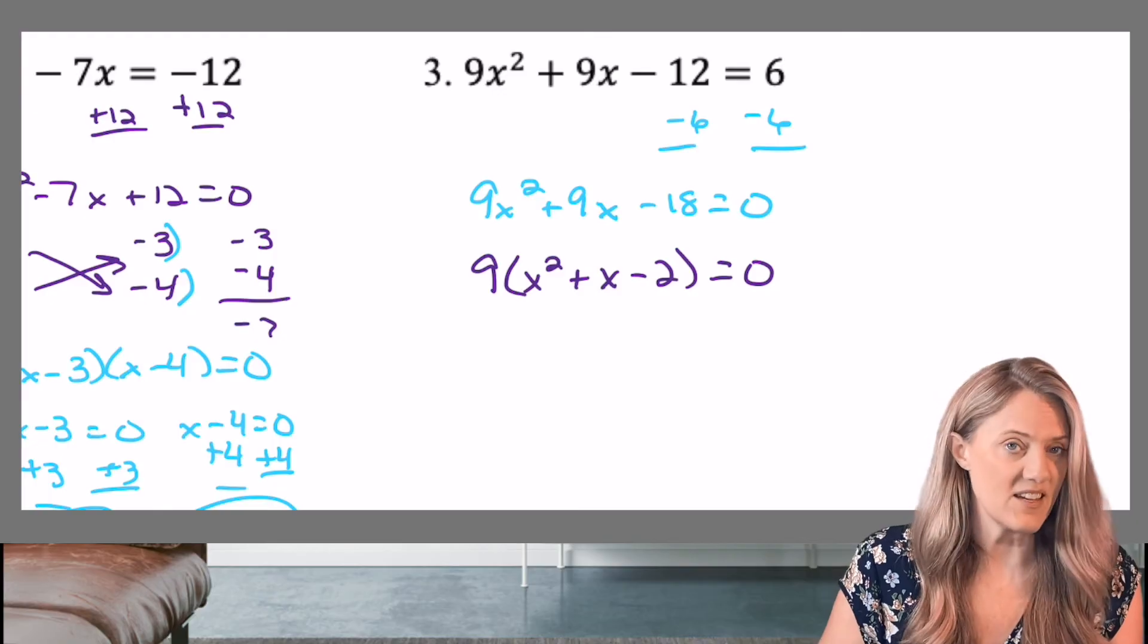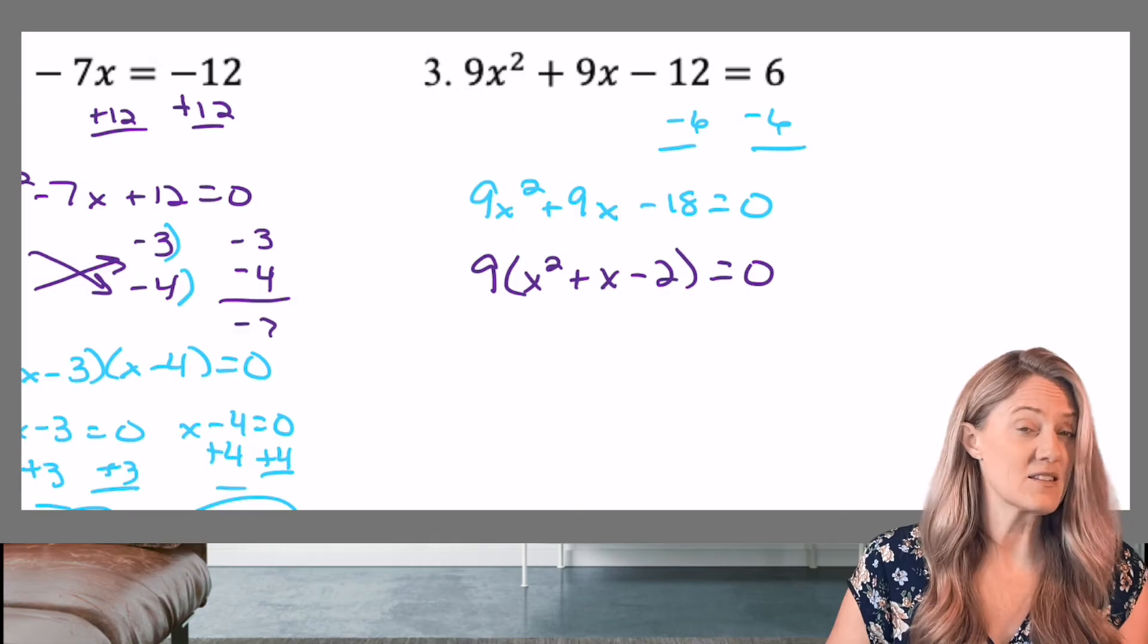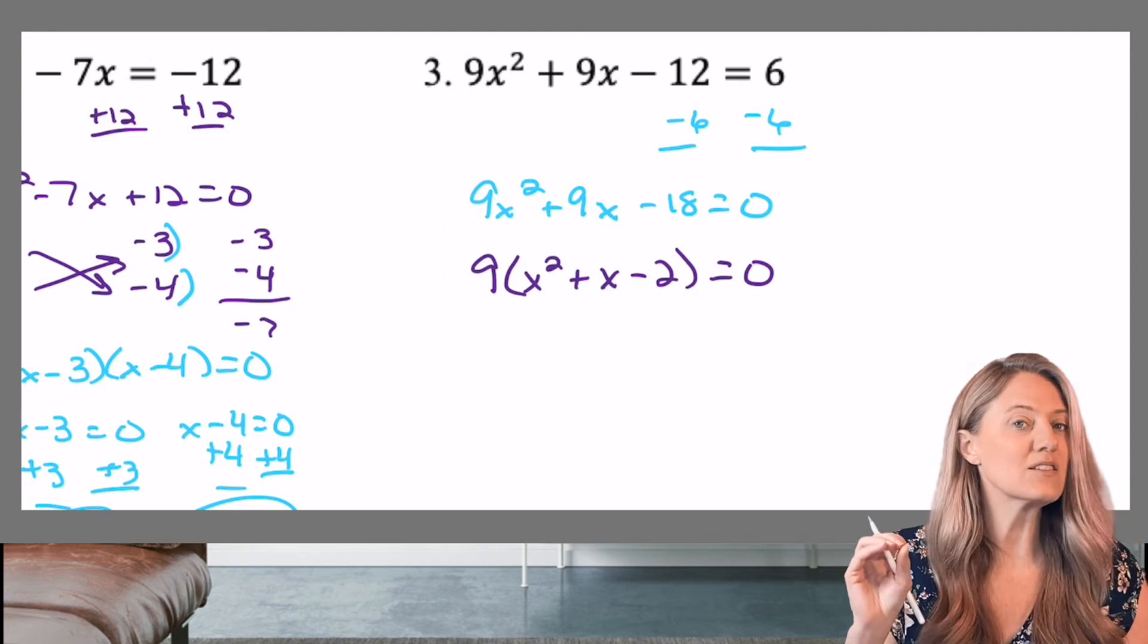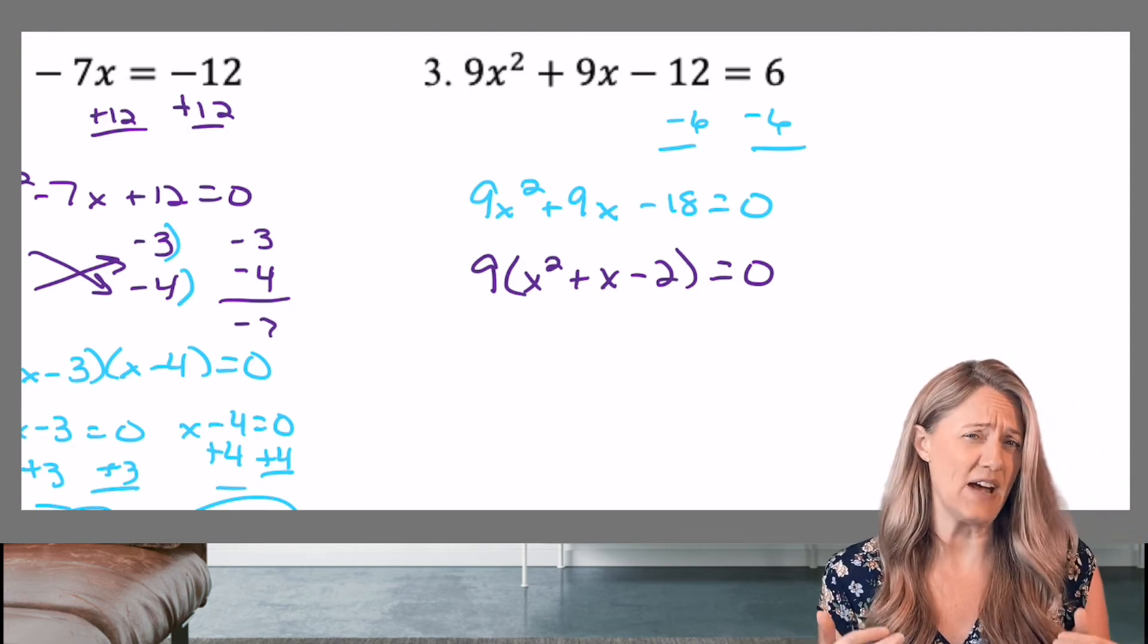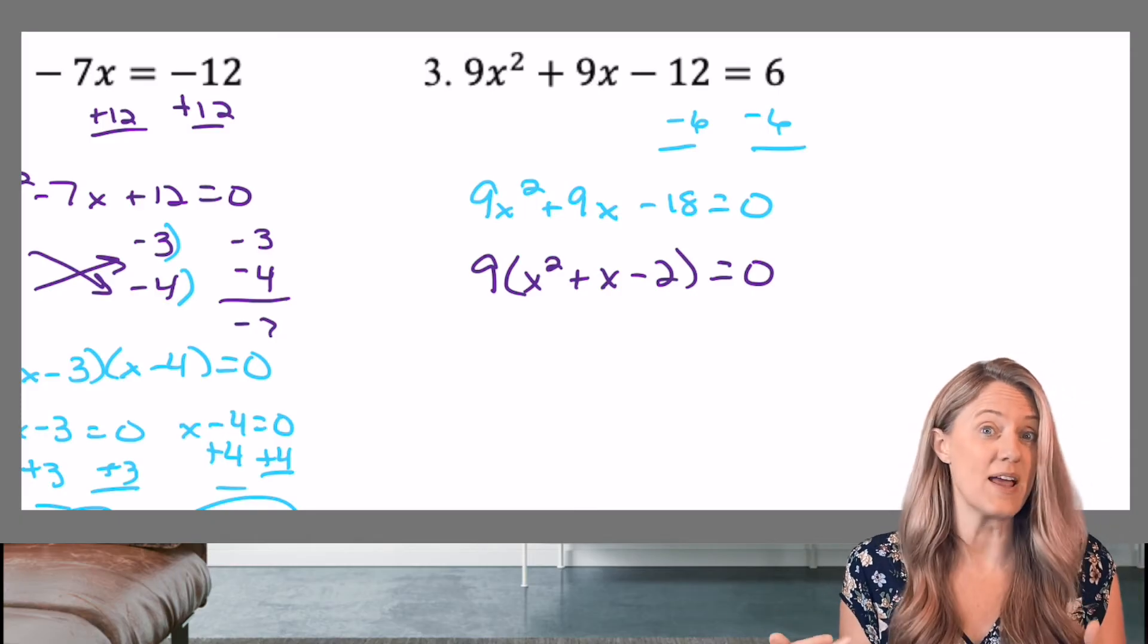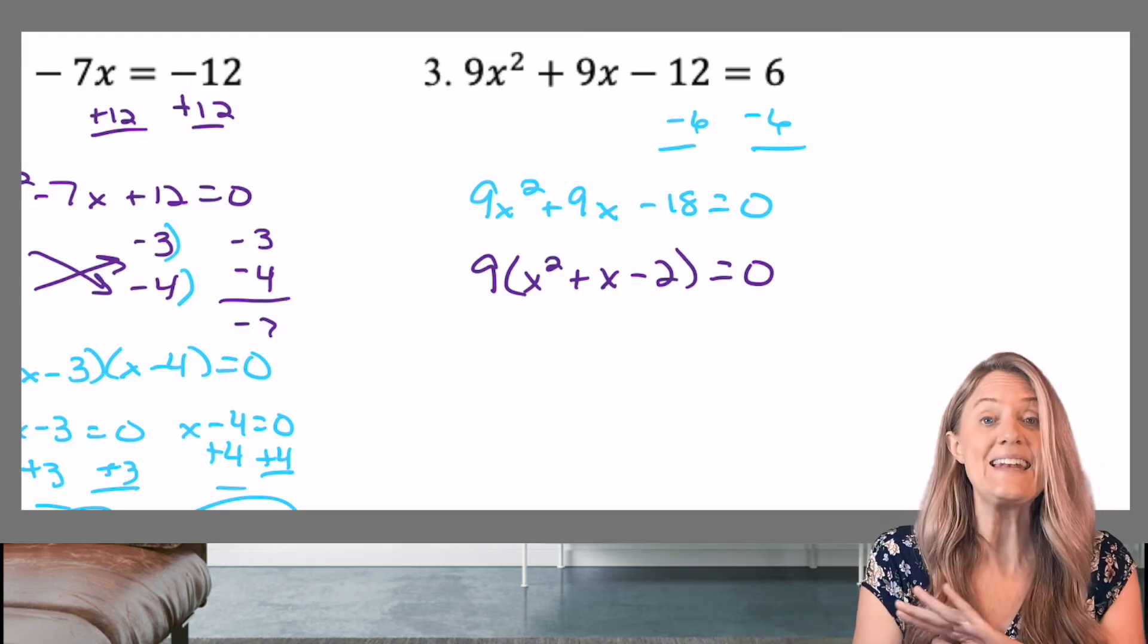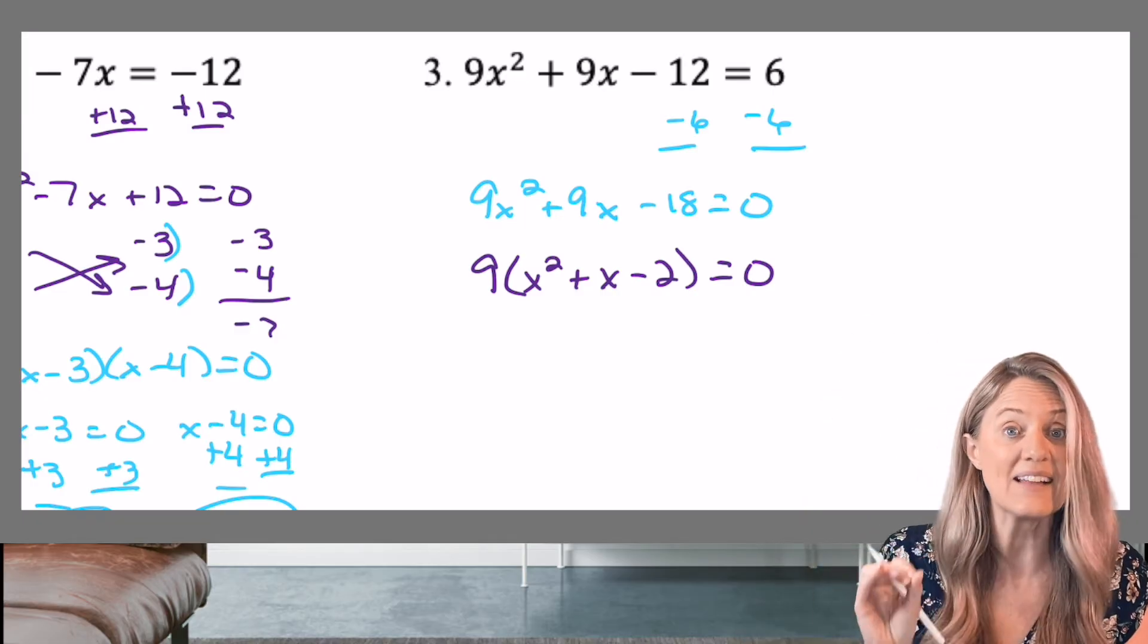So when I factor the nine out, look how much easier it is going to be for me to factor the trinomial. Now let's talk about that nine. Does the nine give us a solution? Is there an X attached with the nine? No, there's not. So we only get solutions when there's an X value. Am I allowed to go ahead and divide the nine out from both sides? I am because zero divided by nine is zero. Nine divided by nine is one. Just remember, we never divide out an X term and have it disappear. That's not okay.